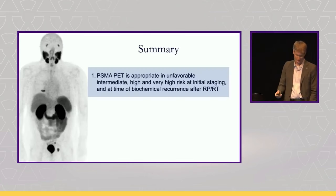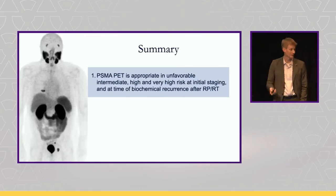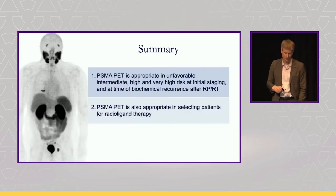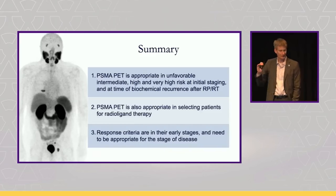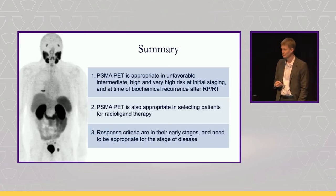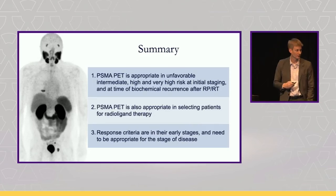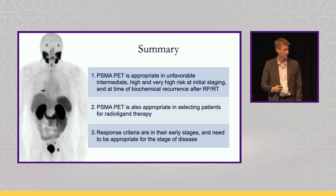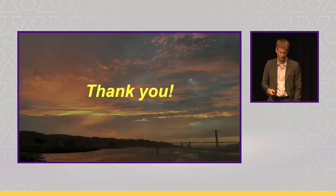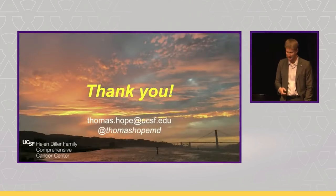In summary: PSMA PET is approved or appropriate in unfavorable intermediate, high, and very high risk initial staging, and in biochemical recurrence — that's fairly straightforward. It's also appropriate in selecting patients for radioligand therapy. These response criteria are really in their early stages and need to be developed with a specific clinical indication in mind, not just published because PSMA PET is going to get a lot of references. Moving forward, we need to be more cautious and cognizant of clinical application when we develop and put forward response criteria. Thank you very much.